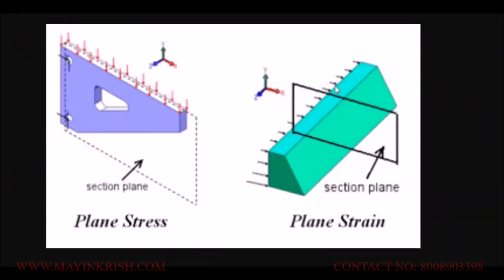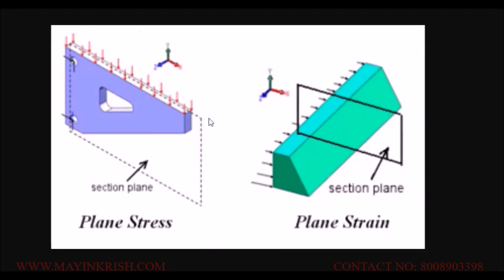Now discussing the thick plate: since it has thickness, it has a tendency to resist deformations, meaning when the load acts on the object, the internal resistance is capable of resisting the deformations. The deformations over the thickness will be considered as zero because the stress acting over the entire object is considered approximately constant. That is why we treat this as plane strain — the deformations along the thickness are zero. That is why we consider the thin plate as the plane stress condition and the thick plate as the plane strain condition.